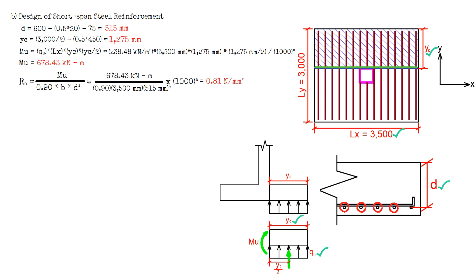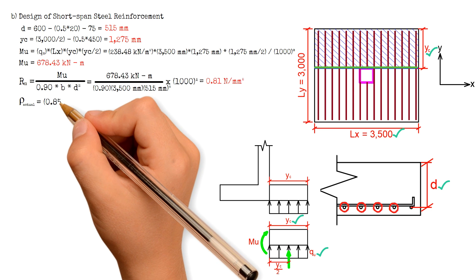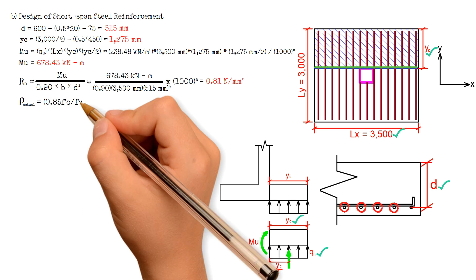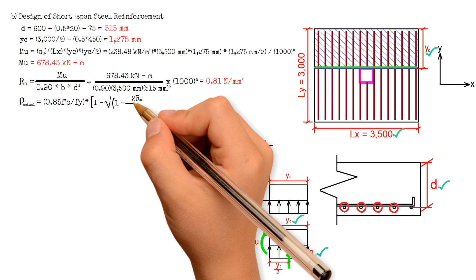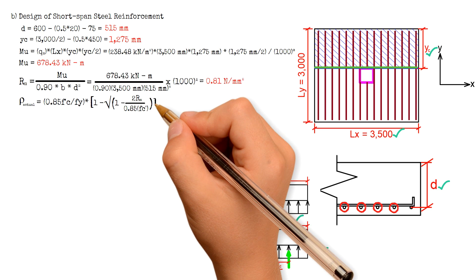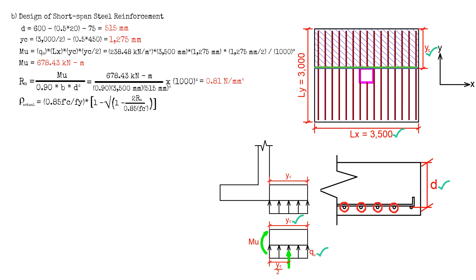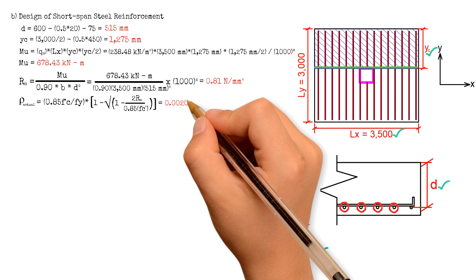After that, we can solve for the actual steel ratio, which has the formula 0.85 times FC prime over FY, times open bracket 1 minus square root of 1 minus 2 times R sub N, divided by 0.85 of FC prime, close parenthesis and close bracket. The result is 0.002.